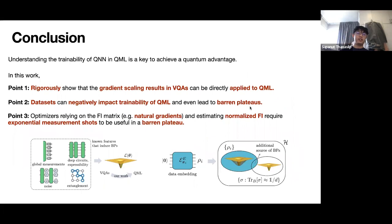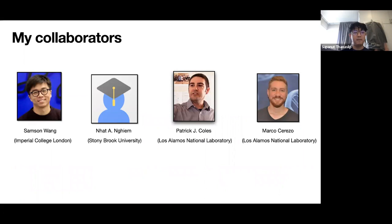In conclusion, we show three points. First, VQA gradient scaling results can be applied to QML. Second, the dataset introduces an additional complication for designing your embedding — it is crucial to consider for QML trainability. Third, regarding Fisher information: if individual terms in the log-likelihood have BP, you cannot use natural gradients or normalize Fisher information to escape it. This work was done collaboratively with Samson Wang from Imperial College, and Patrick Coles and Marco Cerezo from LANL. I'm really happy to have worked with these brilliant people.